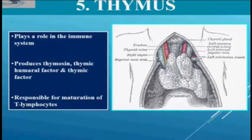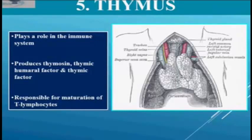It weighs about 10 to 15 grams at birth and grows up to 30 to 50 grams during puberty age. However, after midlife it weighs only 10 grams. This thymus gland looks pinkish in color, slightly elongated, and it is a bilobed mass. It plays a major role in the development of the immune system.